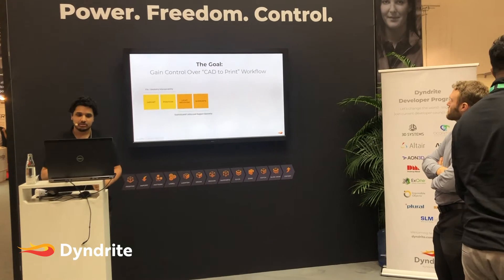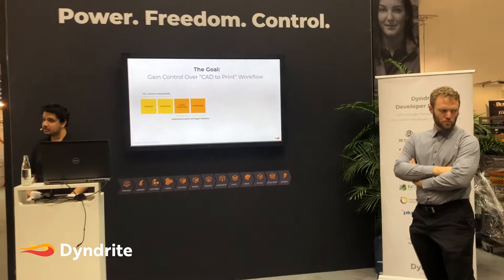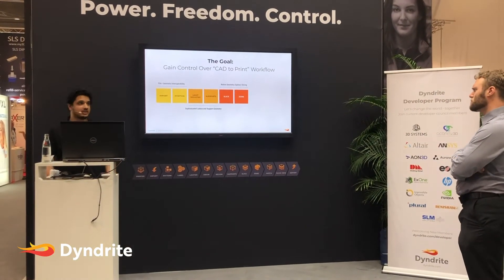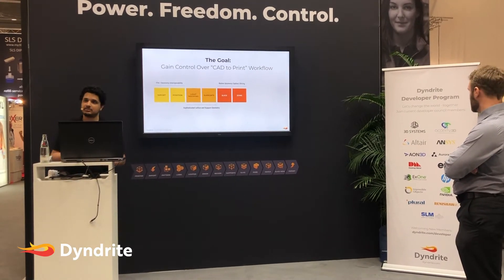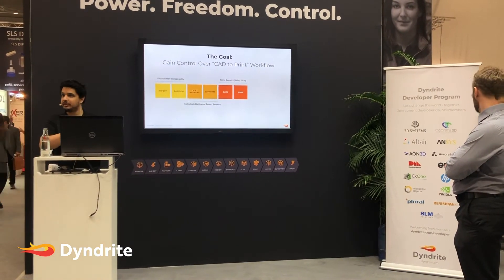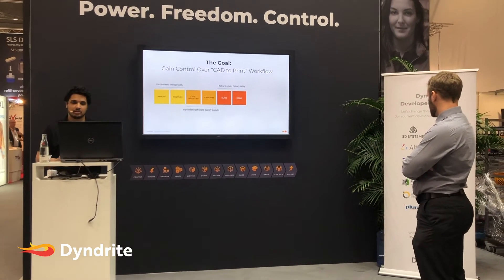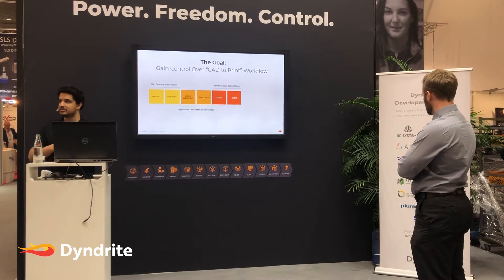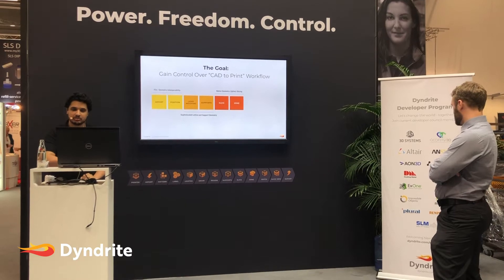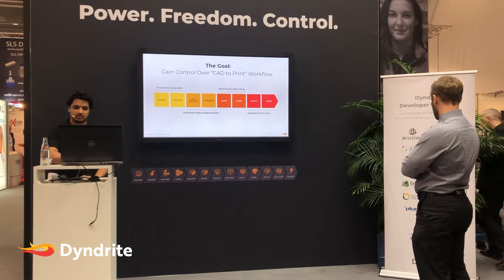Once you bring in the geometry, you want to orient and position it. After that, you want to generate lightweighting and supports — this needs to be fast and sophisticated. Then you want to slice the data. And by slice, I don't mean just slice a tessellated mesh — I mean take the surface, do a planar intersection, get the parametric curves, and discretize on chord height and geometric curvature. We can slice as SVG, PNG, CLI, or any of these formats. You then want to generate the toolpaths, scanning strategies, and exposures.